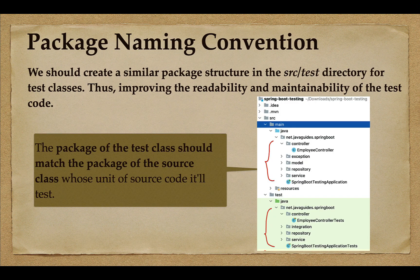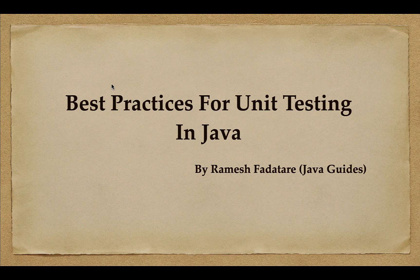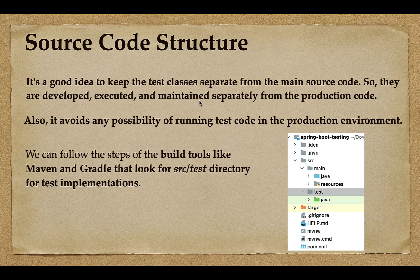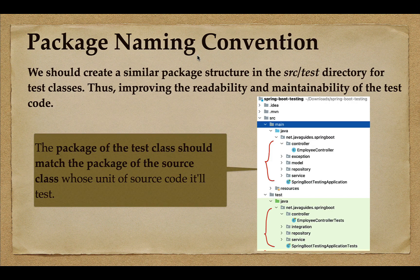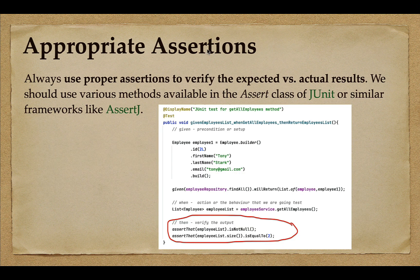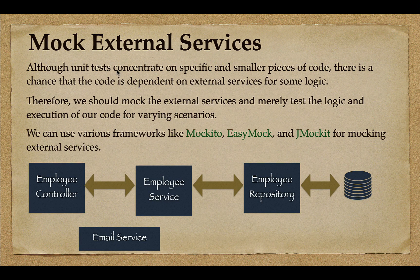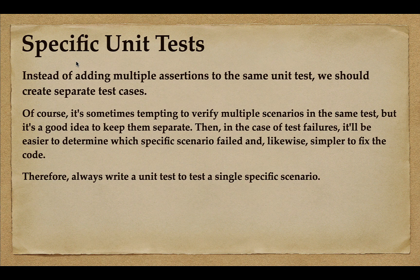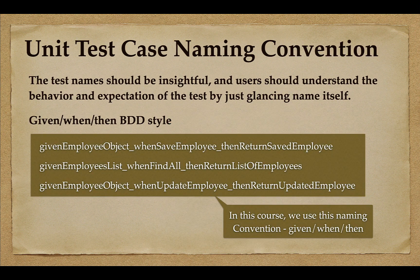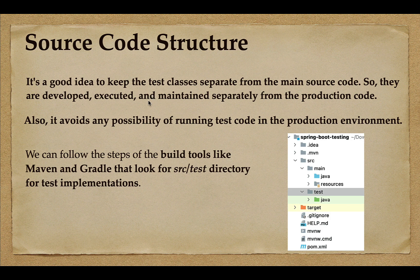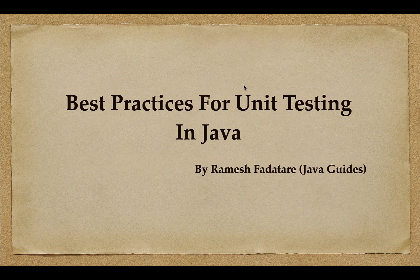These are the important unit testing best practices that we typically follow as developers while writing unit tests. In this course we will follow all of these: the standard source code structure, package naming conventions, unit test case naming conventions, appropriate assertions using AssertJ, mocking external services with Mockito, and focusing on specific unit tests. I will see you in the next lecture.